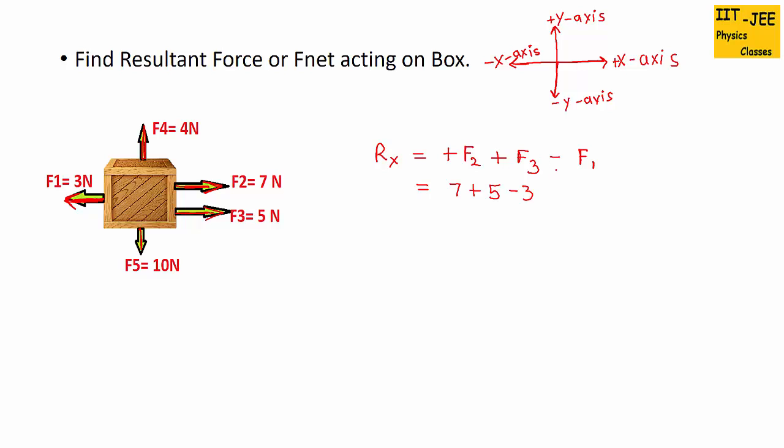You can also draw the vector diagram for this. It's like 7N towards east, 5N again towards east, and then 3N back towards west. So this way 7 plus 5 minus 3N. So this will give us 9N.